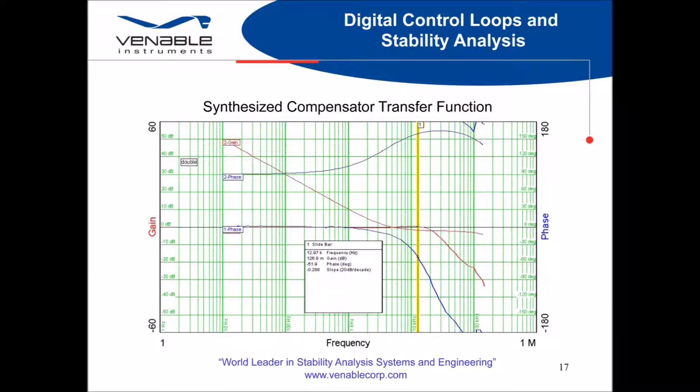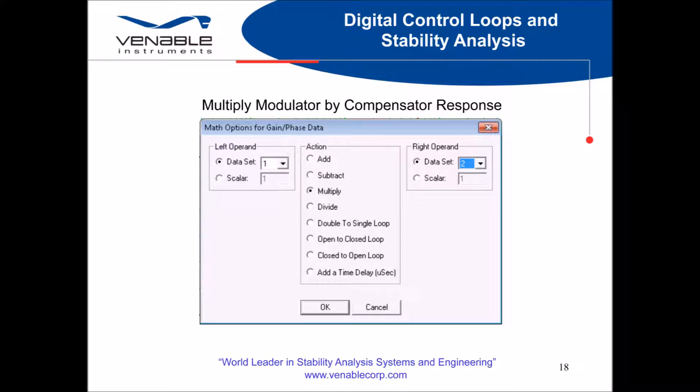From here, we can generate a plot of the predicted total loop by multiplying these two transfer functions. We do this by accessing our math menu from the menu ribbon. In the center of the dialog box, we choose the math action we want to occur — in this case, multiply. On the left side, we select our first plot to multiply. On the right side, we select our second plot to multiply, and then hit OK.